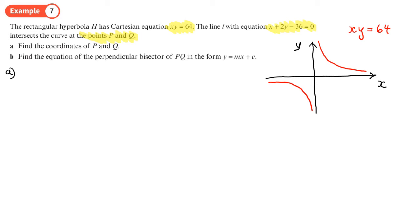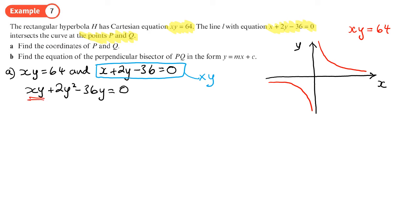The first bit here is just about solving xy equals 64 and x plus 2y minus 36 equals zero. We want to solve those simultaneously. Here's a little trick we could use. We could take this and multiply all by y. They do use a slightly different approach in the book. This might actually be a little bit quicker. If I multiply everything in that by y, I'll get xy plus 2y squared minus 36y equals zero. Now I can substitute this xy for 64.